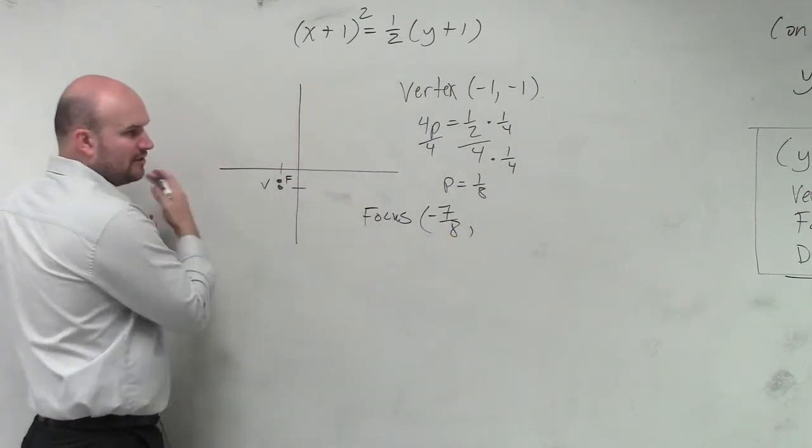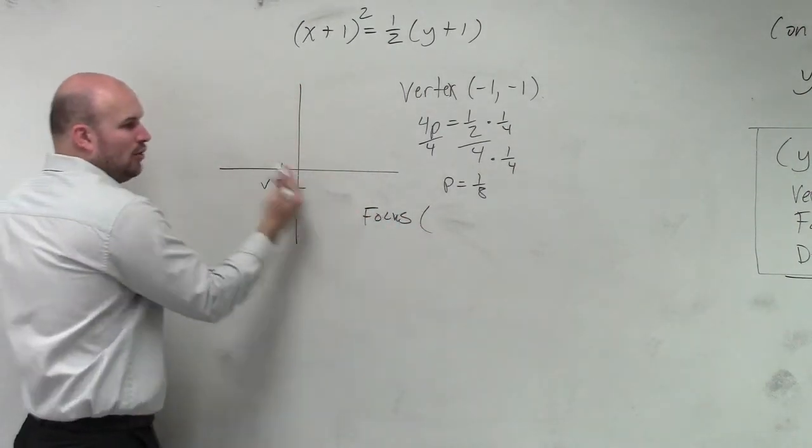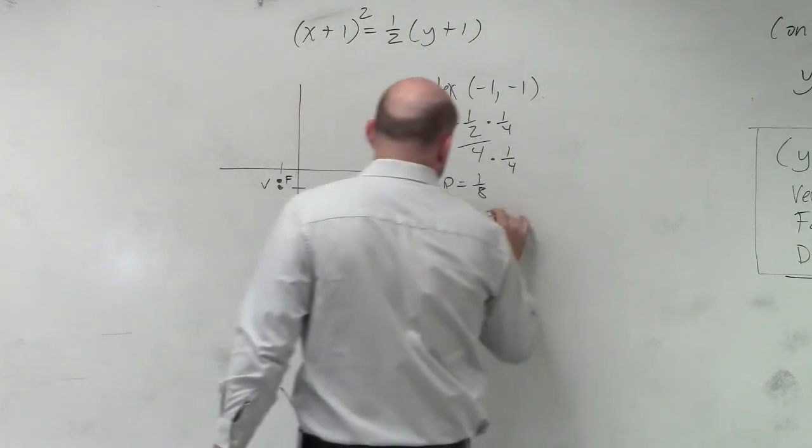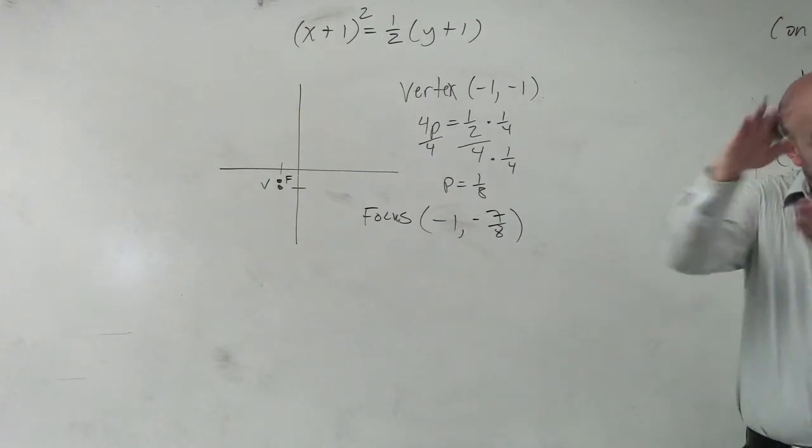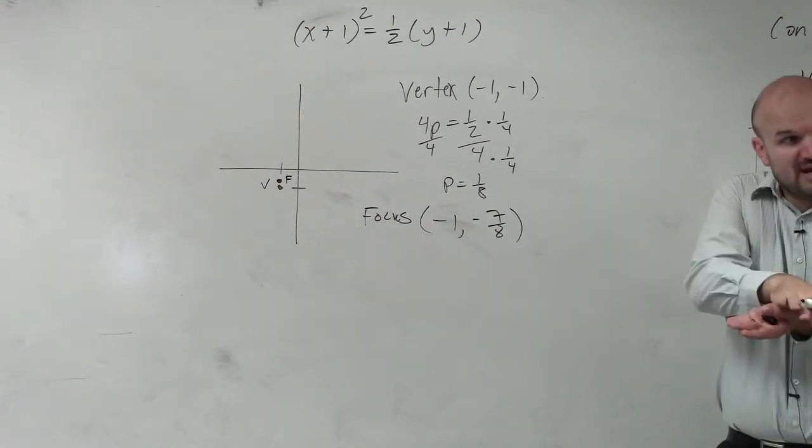And then how far over? Oops, I'm sorry. You've got to be careful. We went over negative 1, and then we're down negative 7 eighths. Instead of going down 1, we went down 1, but then we went up 1 eighth.